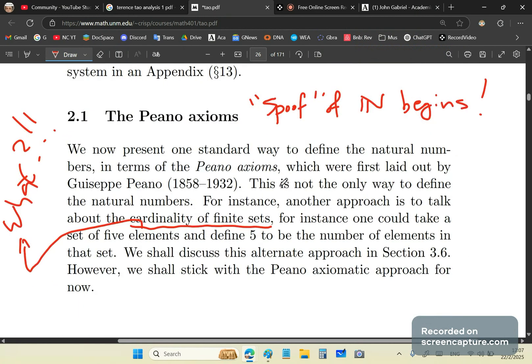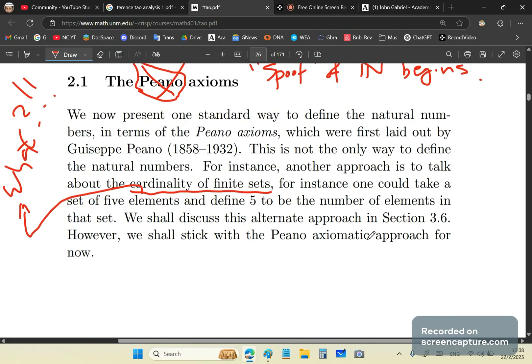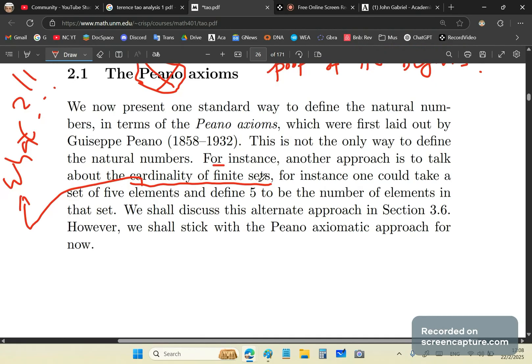So then, after all this waffling and hand-waving and continuation of garbage, he starts his spoof of natural numbers. He says, by the way, Peano was one of the biggest morons in mainstream math academia. Don't even bother to read his crap. He wasn't a mathematician's penis, never mind a brain. We now present one standard way to define the natural numbers in terms of the Peano axioms. Oh my, oh my, oh my. Which were first laid out by Giuseppe Peano. Now, I've got a beautiful poem about Giuseppe Peano, which I think I've mentioned in the previous video. You should read it. And then he says, for instance, another approach is to talk about the cardinality. My, oh my, you idiot. The cardinality assumes numbers, you stupid little Chinese dumbwit.